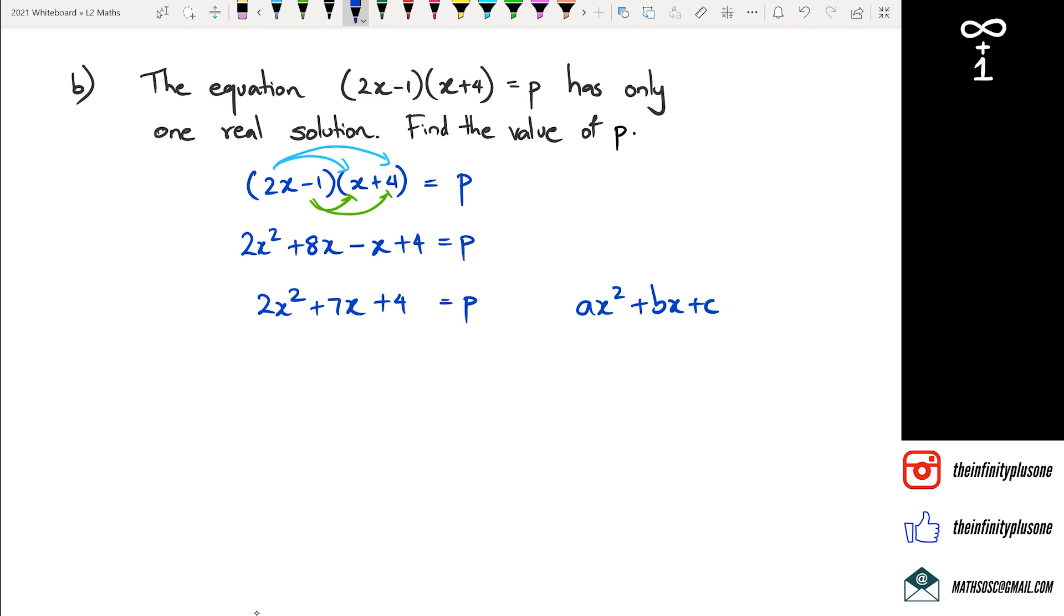which is ax squared plus bx plus c equals to 0. So that right-hand side has to be 0, which means we're going to get rid of the p and bring it to the left-hand side. Now when we bring it to the left-hand side, we're actually going to attach it to the constant because p does not have an x or an x squared next to it. So it's actually going to sit with 4 right there. So then if we look at this in that ax squared plus bx plus c format, what you should see is that a is equal to 2, b is equal to positive 7, and c is equal to this entire thing, which is 4 minus p.